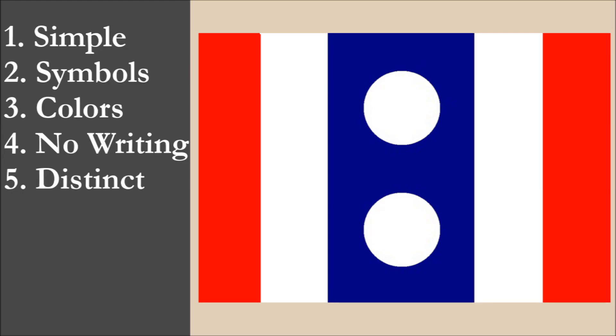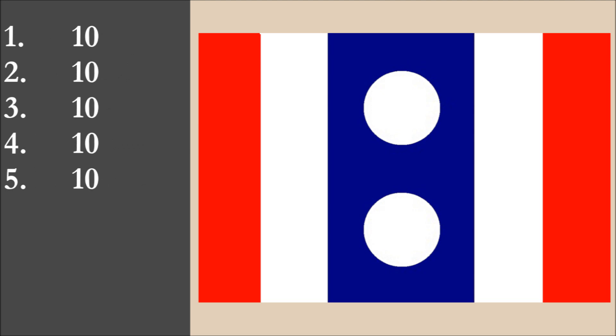So now we've reviewed the flag on each of the five principles. We're going to add the scores and divide by 5 to get the average. So for Carlo's Thai-Lao flag, we get a final score of 10 out of 10.